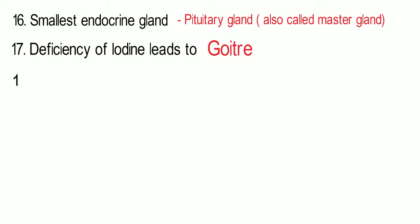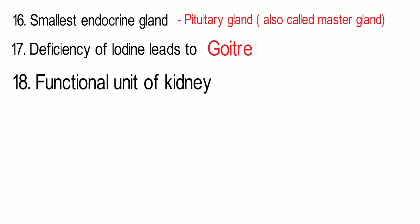Deficiency of iodine leads to the disease known as goiter. The functional unit of the kidney — the kidney's smallest unit — is the nephron.